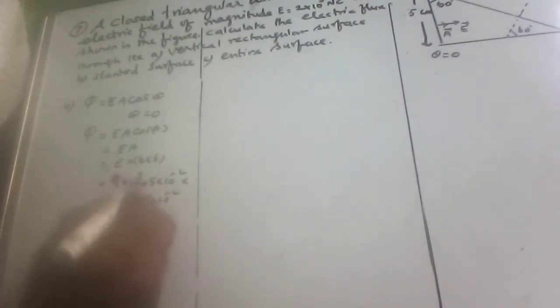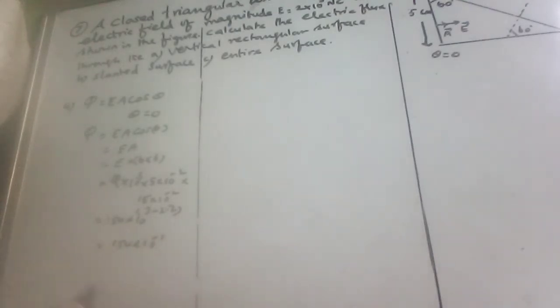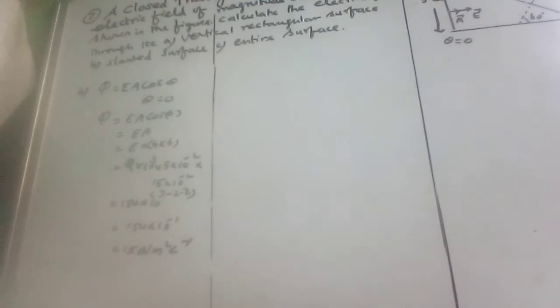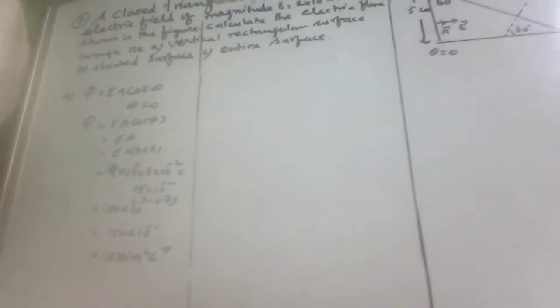2 times 5 is equal to 10. 10 into 15 is equal to 150. So 150 into 10 power 3, and 10 power minus 2 times minus 2 equals 10 power minus 4. So we get 15 into 10 power minus 1, or 15 newton meter square per coulomb. This is option A. Now the next step is option B.